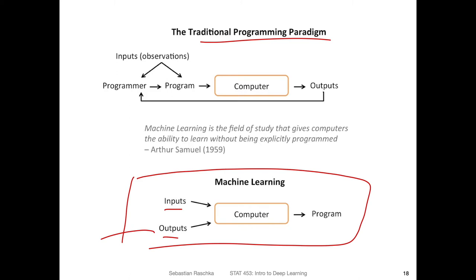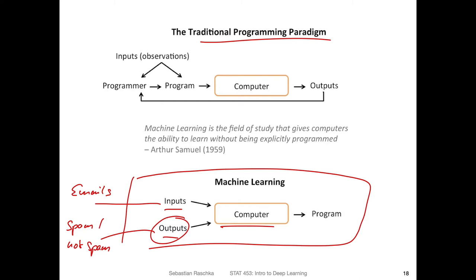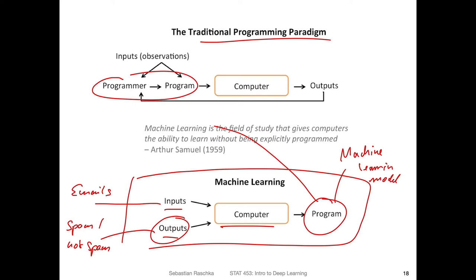The outputs would be whether emails are spam or not spam. A human has to label those — you have to communicate to the computer what you want, saying we want spam and non-spam email labels. We provide these as examples, and then the computer can learn rules to make this classification. So the computer is actually developing this program — this is our machine learning model. The model can then replace the programmer's role, and we can give it directly to the computer to produce new outputs on new data.